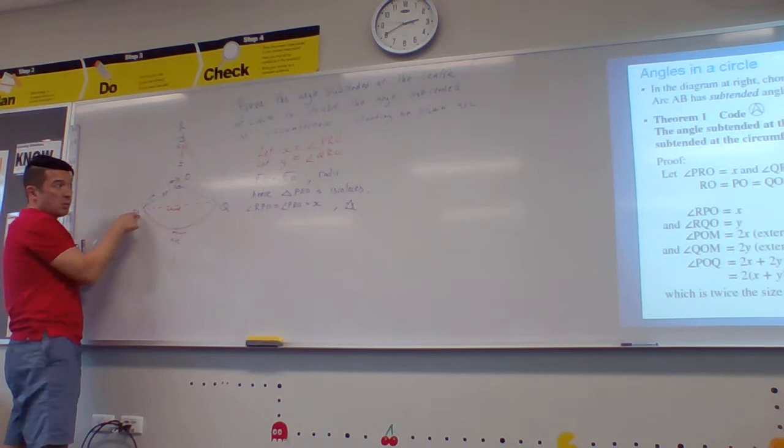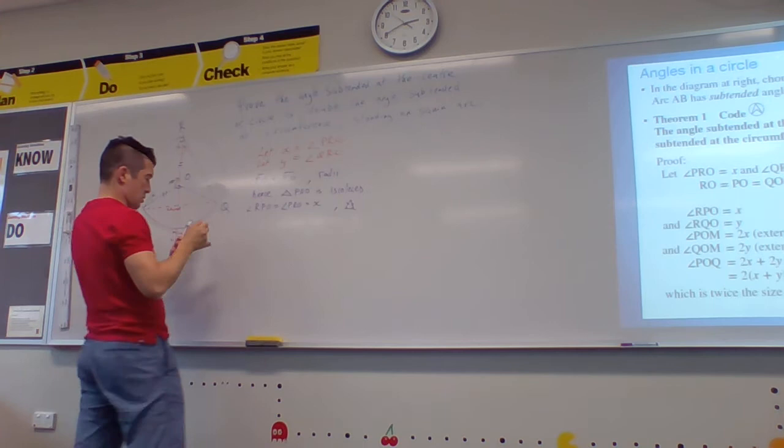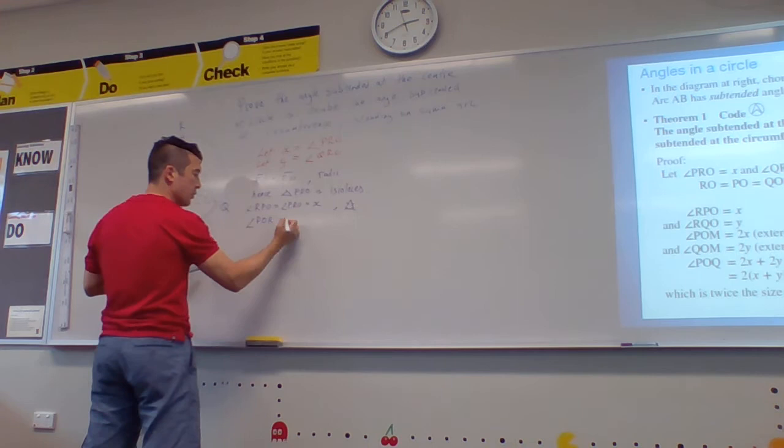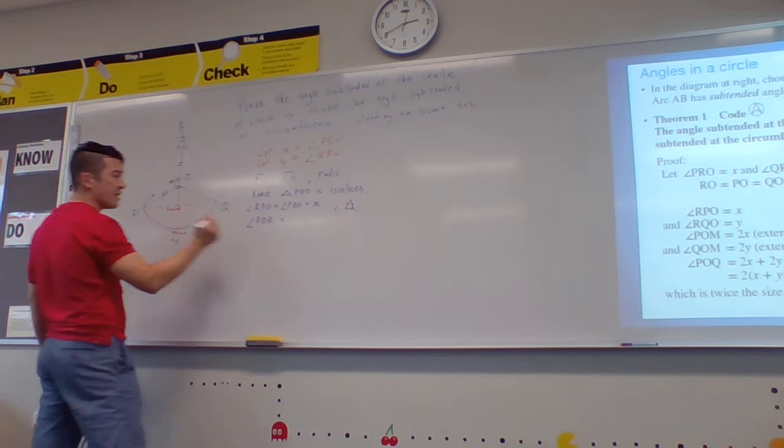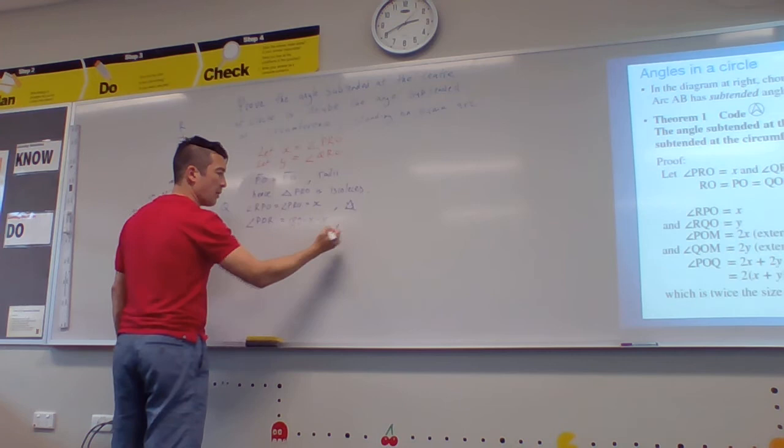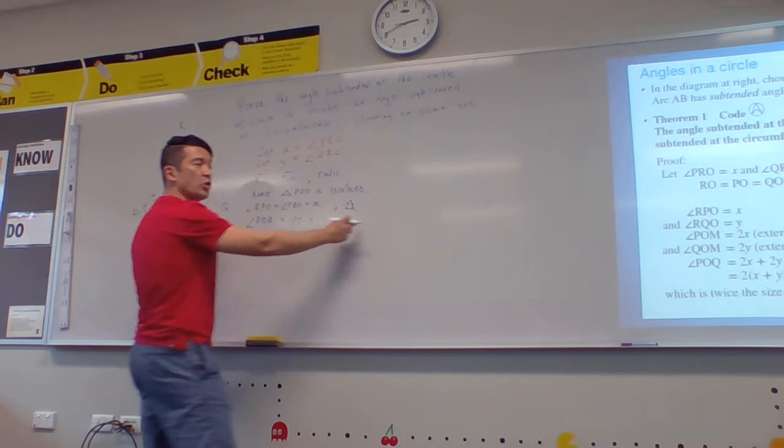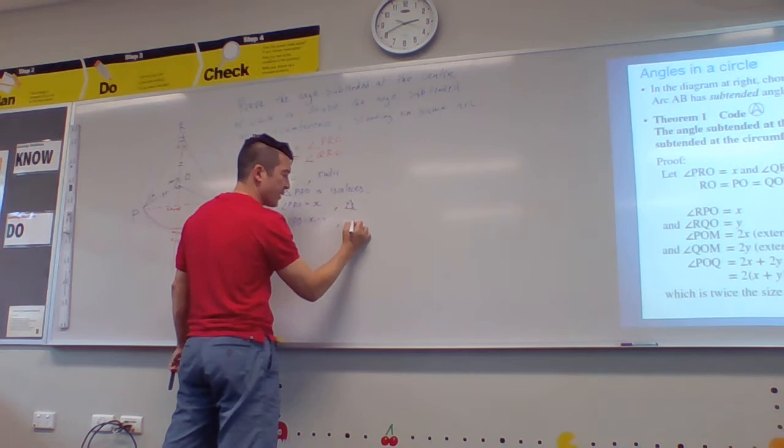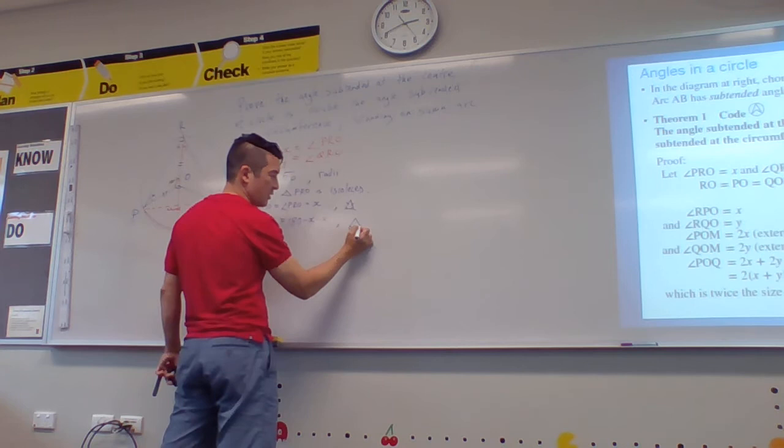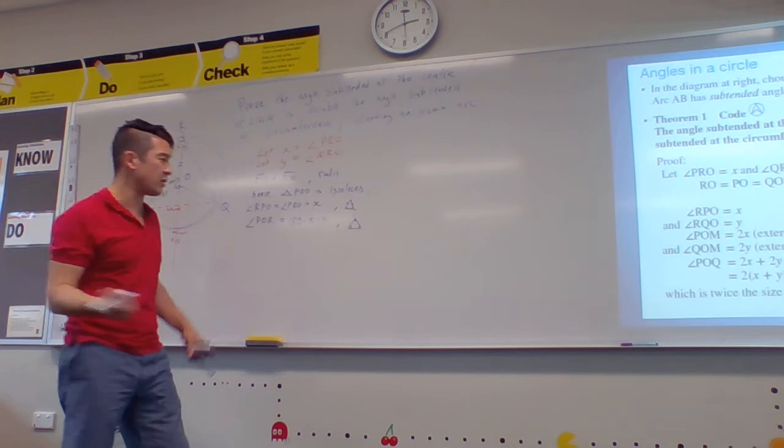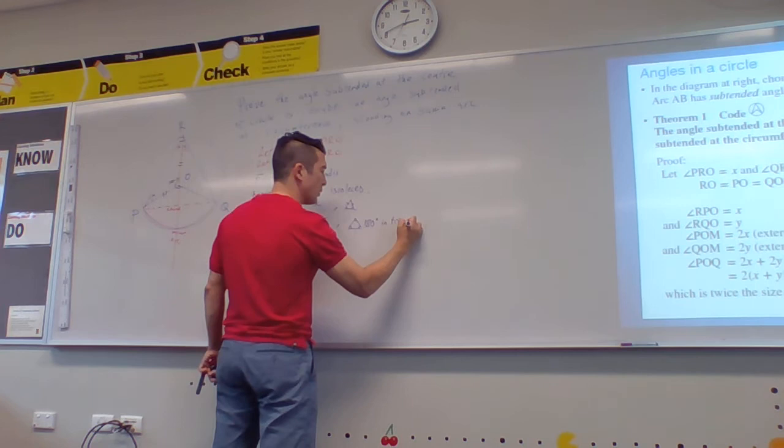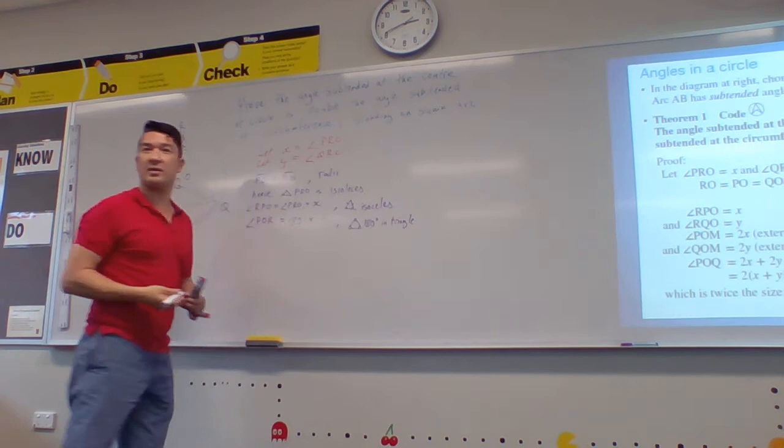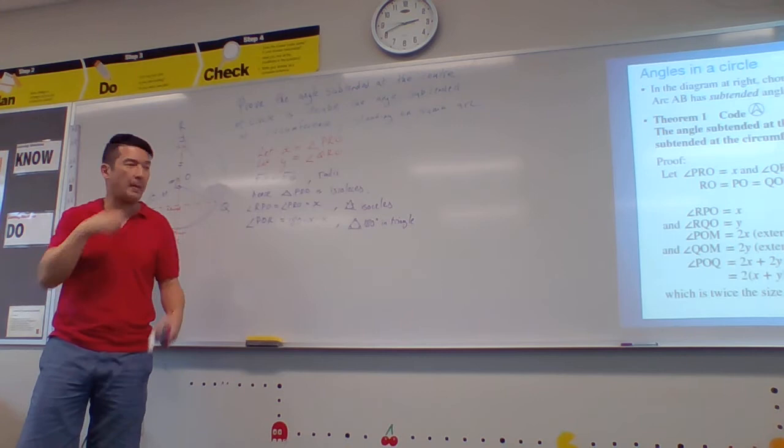So how do I write that? I'm going to say angle POR equals 180 minus 2X. What's the rule for that? You could write, if you want, 180 degrees in a triangle, or there's a symbol. What do you reckon it looks like? How would you show 180 degrees in a triangle? That's the 180 degrees. But if you don't know the symbol, you can just write 180 degrees in triangle.